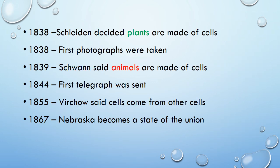Then a whole bunch happened at once. In 1838, Schladen looked at plants and concluded that plants were made of cells — the same stuff Hooke and Leeuwenhoek had described. Also that year, the first photographs were taken. In 1839, Schwan said that animals are also made of cells — the same things plants are made of. In 1844, the first telegraph was sent. In 1855, Verkau said that all cells come from other cells, which connects back to our fruit fly experiment — living things can't spontaneously arise from nothing. In 1867, Nebraska became a state.